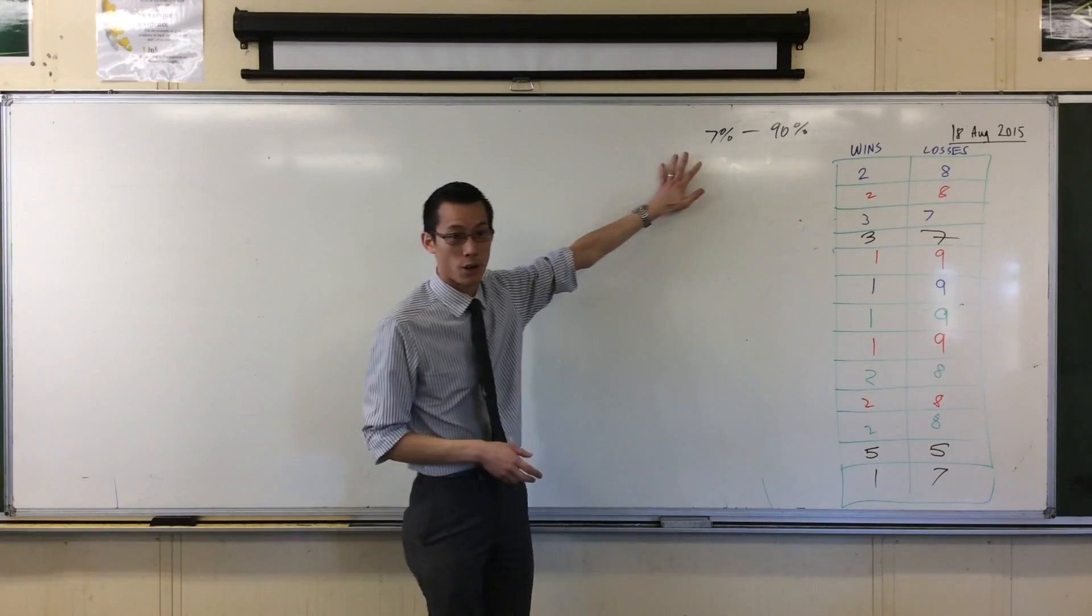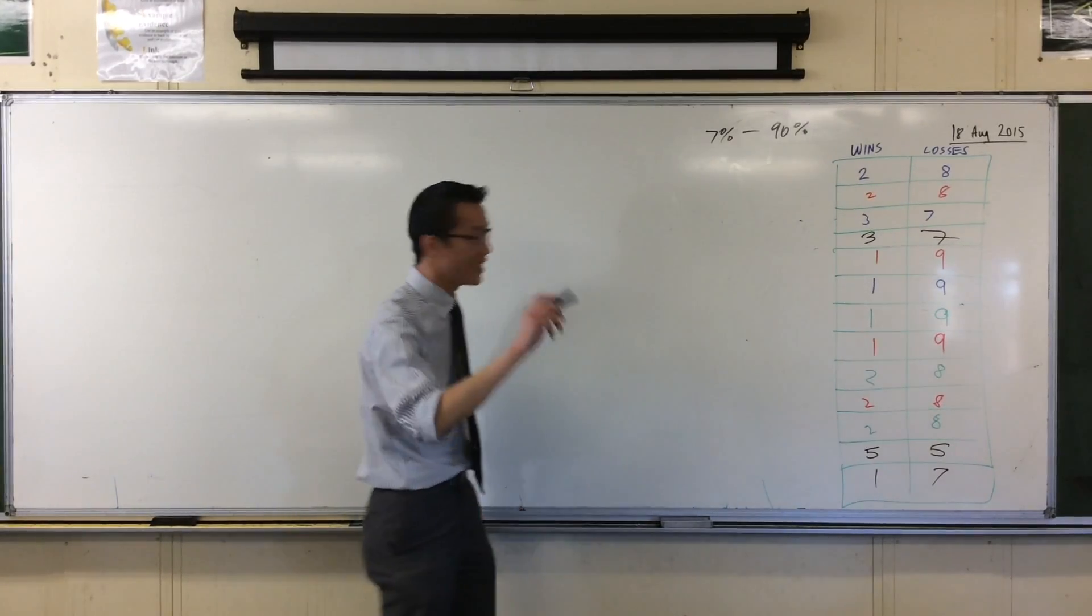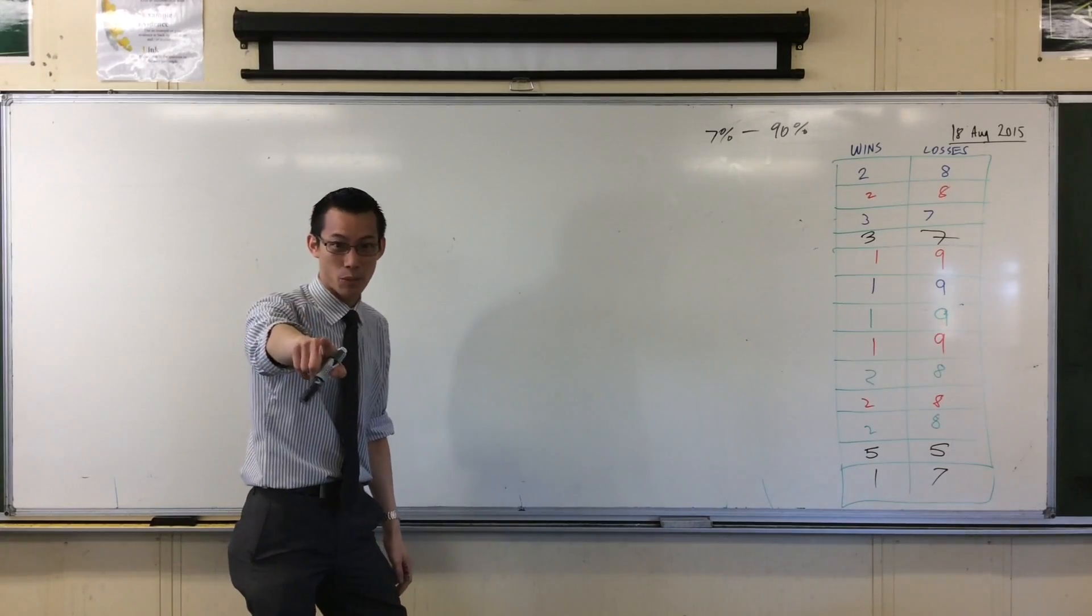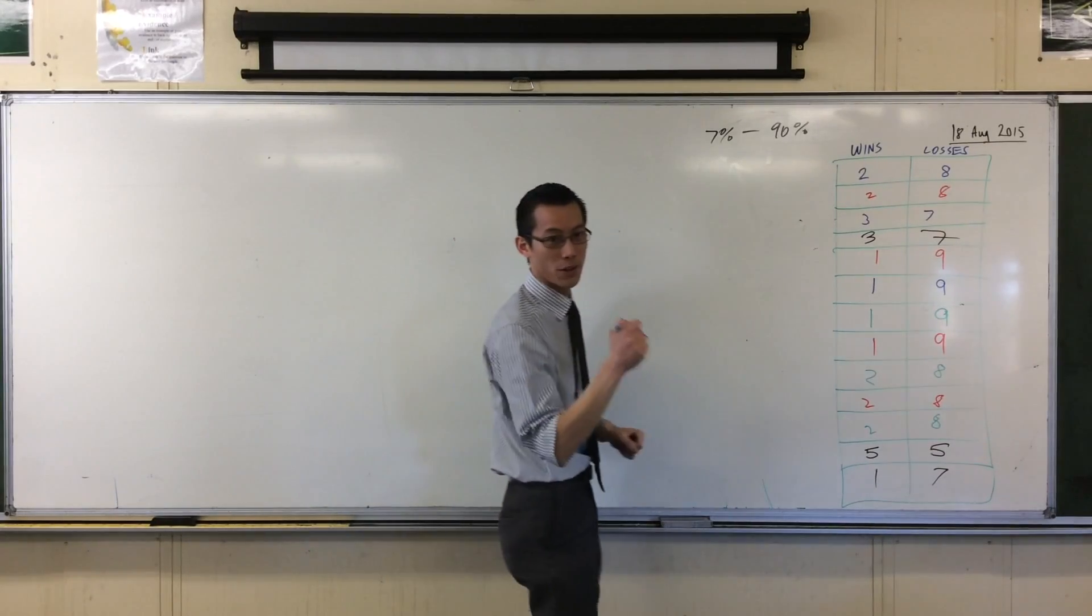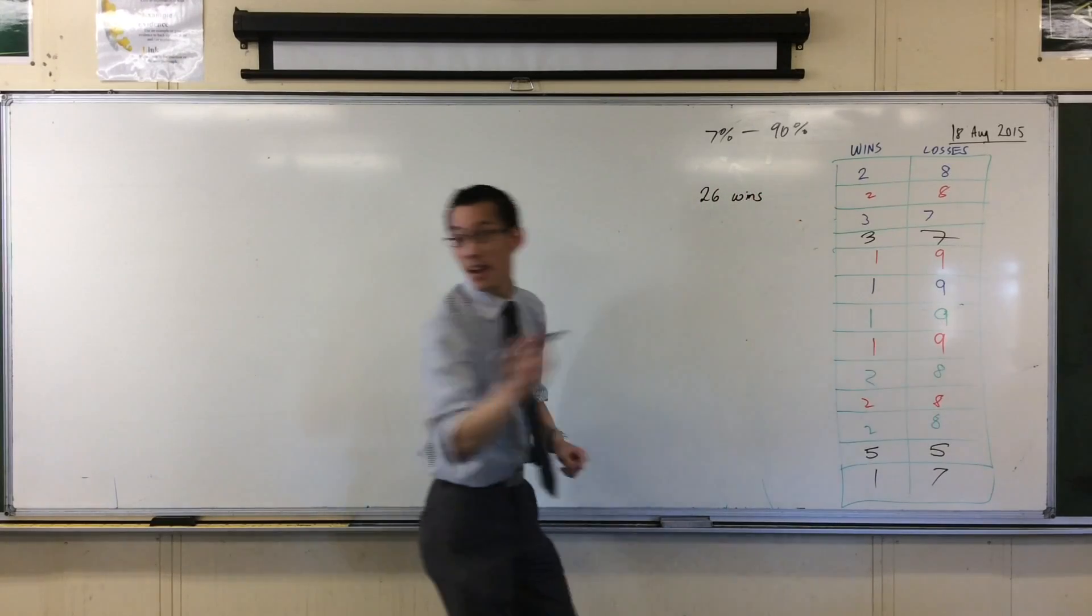I asked some people to prepare some numbers for me. Daniel, how many wins in total are there on the board? 26 wins. Mr. Hughes, number of losses? 102 losses.